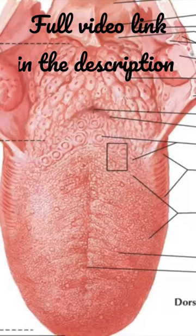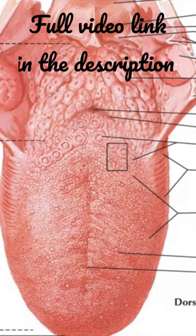About the filiform papilla. These are numerous tiny conical projections affecting the entire dorsal surface of the anterior two-thirds of the tongue.